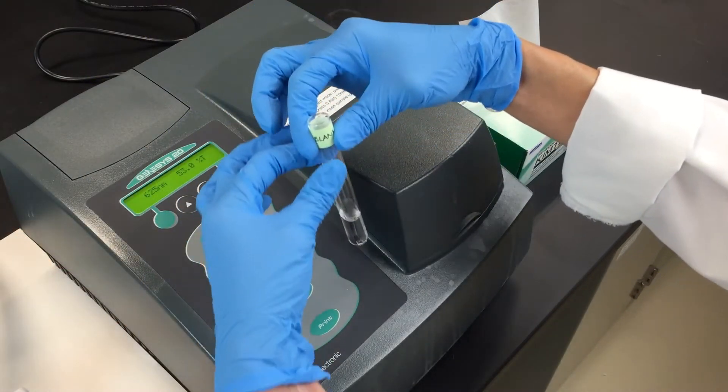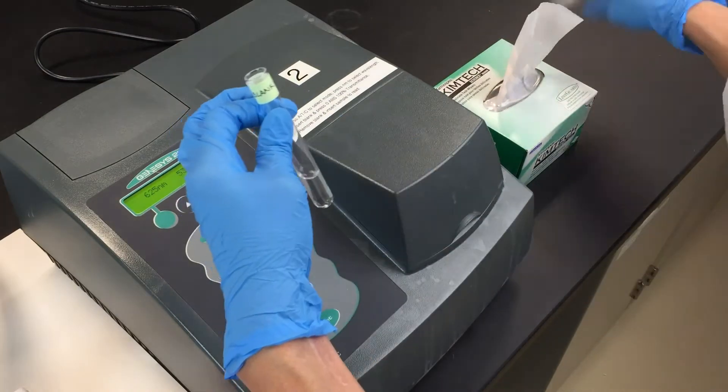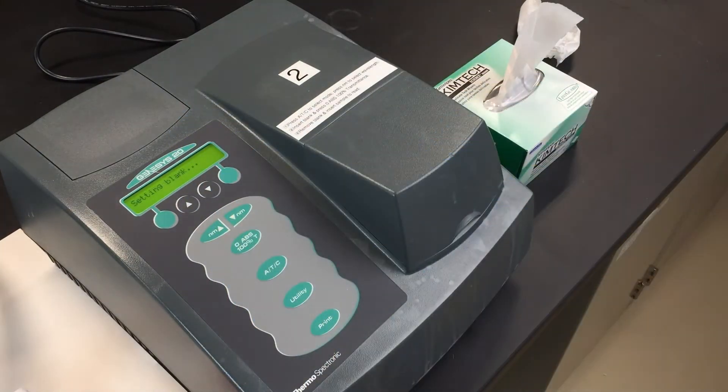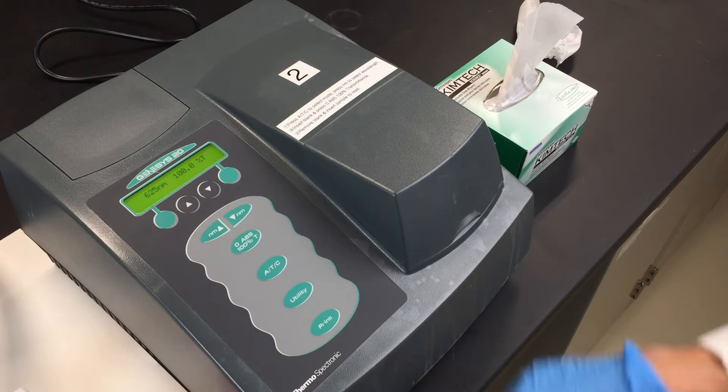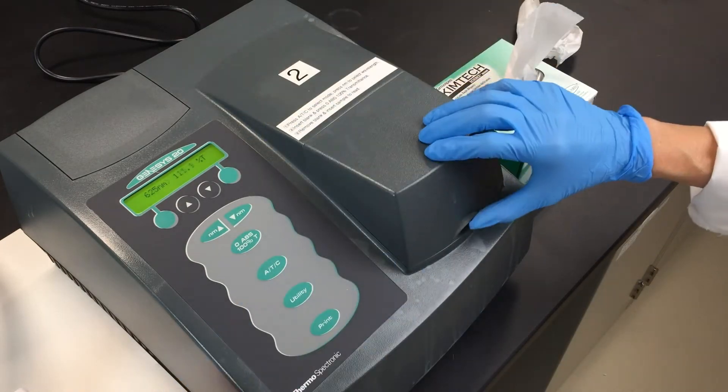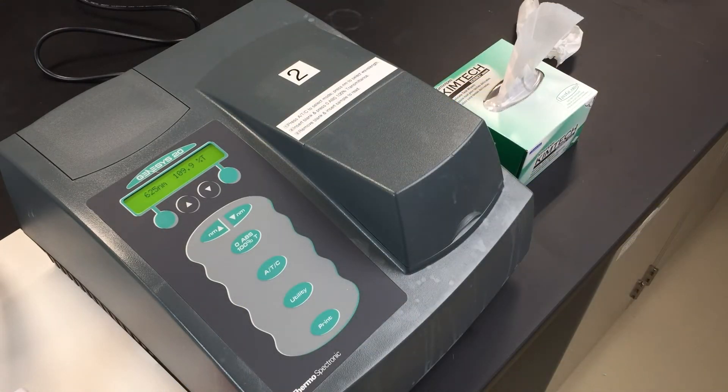Wipe any fingerprints off the blank tube and place it in the spectrophotometer. Press the 0 ABS 100% transmittance button to blank your spectrophotometer. Once you've blanked it, you don't have to do it again.